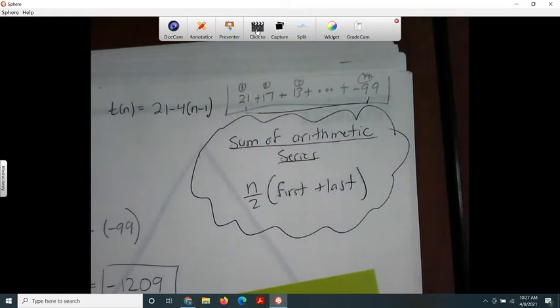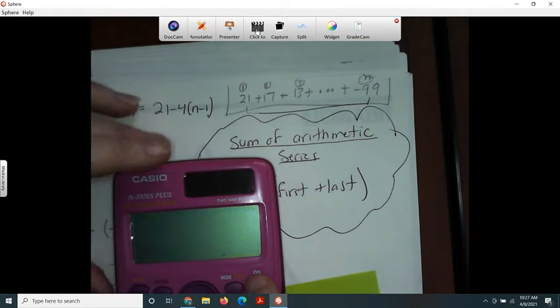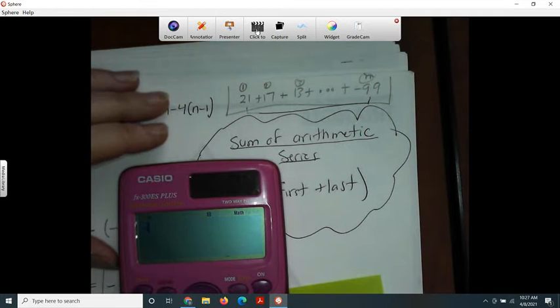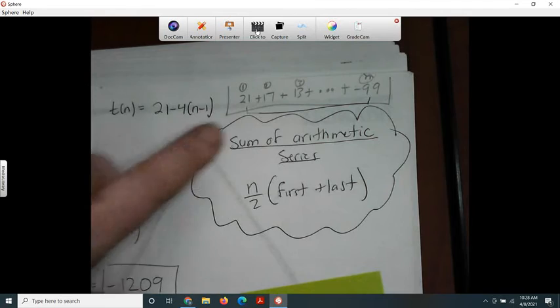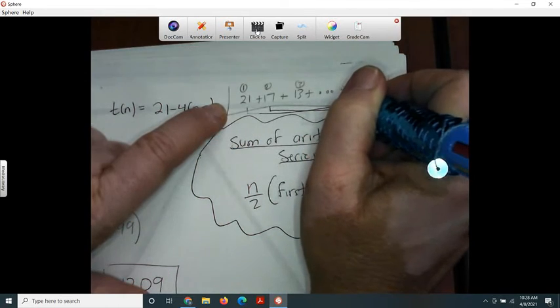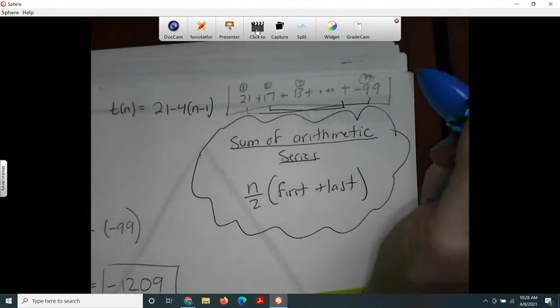Negative 99 plus 21 equals negative 78. But it turns out that the second term and the next to last term is also going to add up to negative 78.